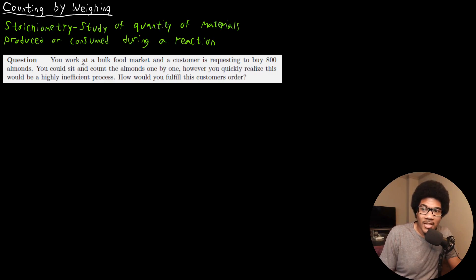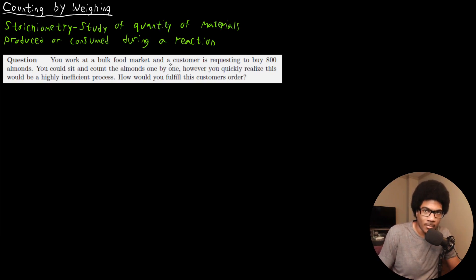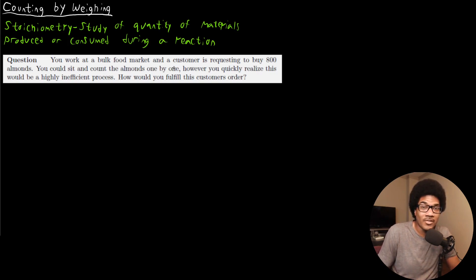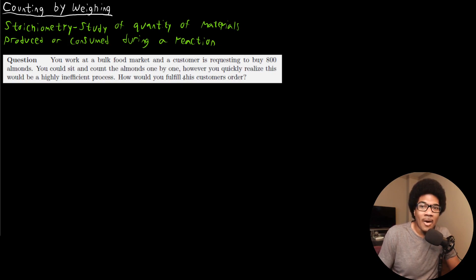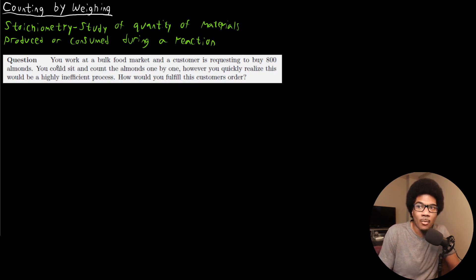The question I have here says: you work at a bulk food market and a customer is requesting to buy 800 almonds. You could sit and count out all of those almonds one by one until you reach 800. However, you would quickly realize that that's a very inefficient way to do this. So how else can you fulfill the customer's order without having to pick out the almonds one by one?